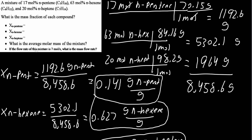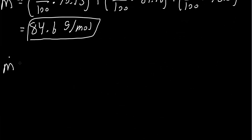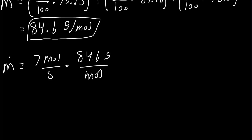Lastly, we want the mass flow rate in grams per second, given the flow rate of the mixture is 7 moles per second. Mass flow rate equals 7 moles per second times the average molar mass of 84.6 grams per mole. The moles cancel, and we get 592 grams per second.